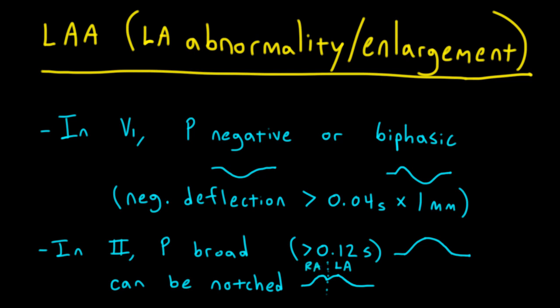Important causes of left atrial abnormality include hypertensive heart disease, cardiomyopathies of any cause, coronary artery disease, and valvular heart disease — especially aortic stenosis, aortic regurgitation, mitral stenosis, and mitral regurgitation.